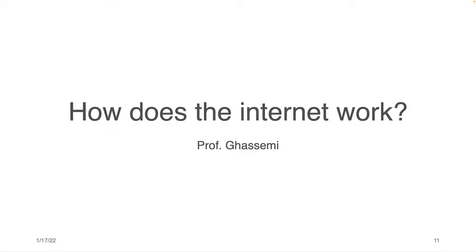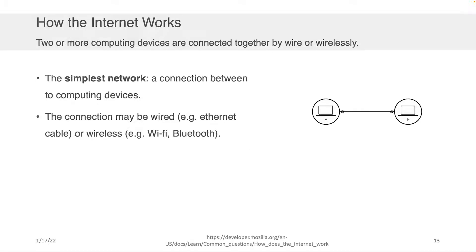Hi everybody, Professor Gassimi here, and in this component of the lecture, we're going to be speaking about how the internet works. I think the easiest way for you to conceptually understand how the internet works is for us to start by building the simplest possible network and trying to grow that network, and it will hint at the kinds of complexities that exist when growing large-scale networks, which is what the internet is, and will give you an intuition behind the various components.